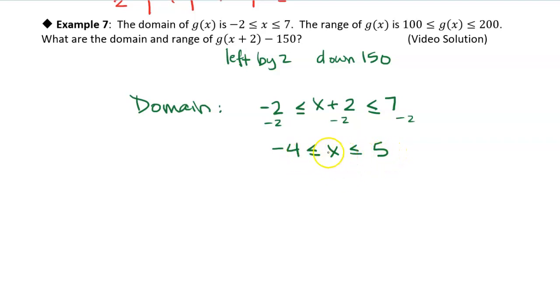So all we did was, we know that the new input is x plus 2, but still g of x is only defined for inputs between negative 2 and 7. So let's look at the range. And I should say too, you can see that what we did is we shifted the domain to the left by 2. You can think of it that way as well. So let's look at the range now.